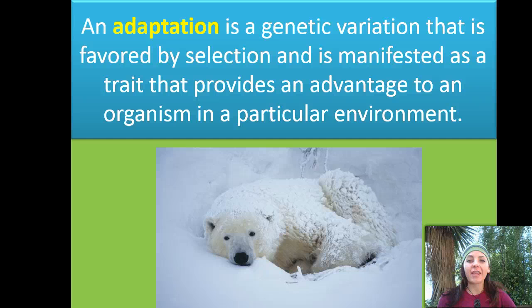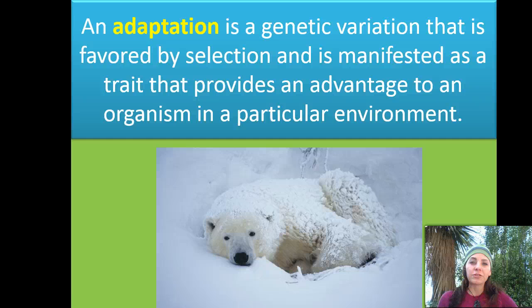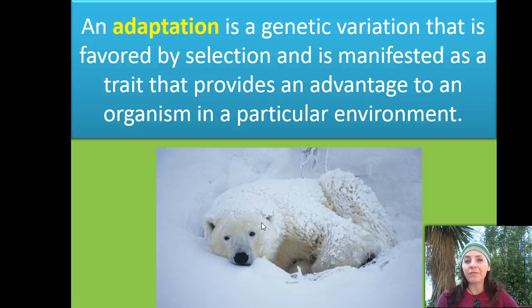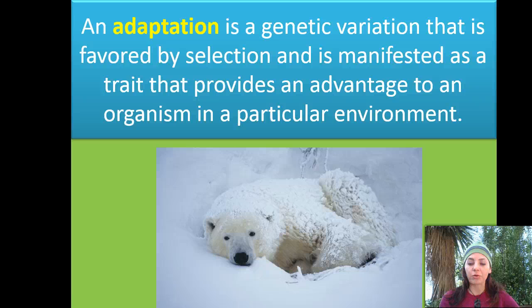An adaptation is a genetic variation that's favored by selection, and it's manifested as the trait that provides the advantage to an organism in a particular environment. For example, the polar bear is an example of adaptation — it has very thick fur, clear fur that reflects light and makes it appear white so it blends in with its environment, and a thicker layer of fat to help protect it from the cold. This is similar to what we saw with hares in the snow versus the desert.